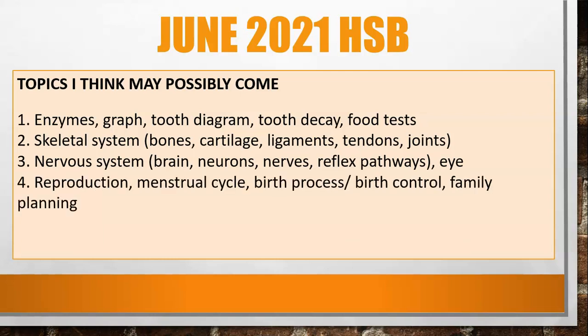And then reproduction — either the reproductive systems in males or females. I haven't seen a question on the menstrual cycle in a while, so there's a possibility they may bring something on the menstrual cycle — maybe a diagram or graph showing the menstrual cycle and how to interpret the different changes throughout the period. And possibly the birth process and birth control and family planning.